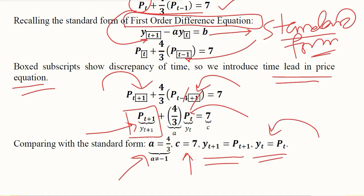Now it is time for us to decide the formula. We know that it gets decided on the basis of the value of a, which is equal to 4 over 3, which is definitely not equal to minus 1. It means that we can use the first of the two formulas that we have to solve a first order difference equation.